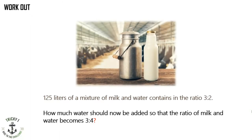The workout question: 125 liters of a mixture of milk and water contains a ratio of 3 to 2. How much water should be added so that the ratio of milk to water becomes 3 to 4?